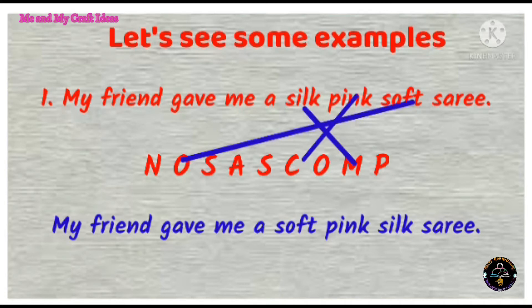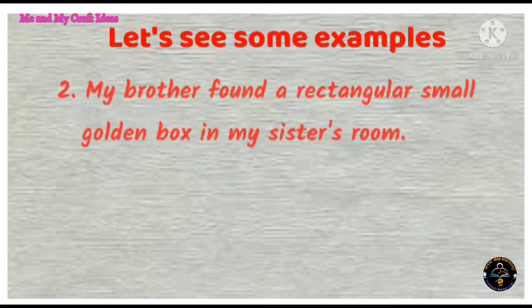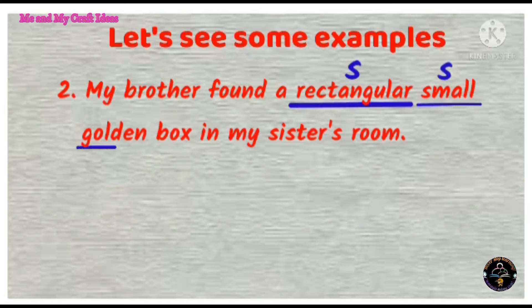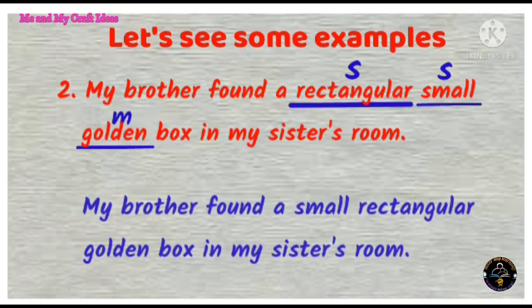Let's see some more examples. My brother found a rectangular small golden box in my sister's room. In this sentence, rectangular is shape, small is size, and golden is material. So the correct adjective order is: my brother found a small rectangular golden box in my sister's room.